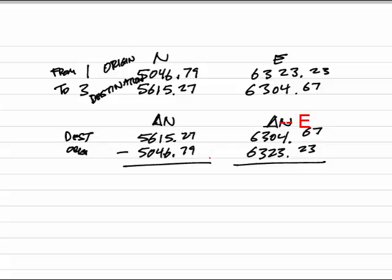I'm going to crunch some numbers. If I take 5615.27 minus 5046.79, I'm going to get a positive 568.48. Then if I subtract 6304 from 6323.23, I will get a negative 18.56 feet. We have to be very careful to watch that we show the results as being positive or negative as appropriate.